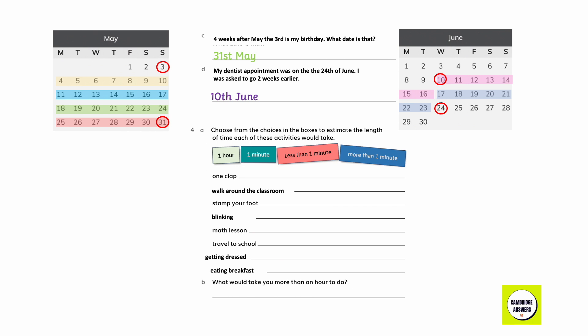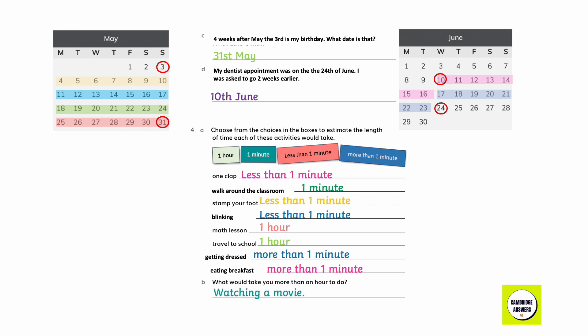Choose from the choices in the boxes to estimate the length of time each activity would take. One clap: less than one minute. Walk around your classroom: one minute. Stamp your foot: less than one minute. Blink your eyes: less than one minute. Math lesson: one hour. Travel to school: one hour. Get dressed: more than one minute. Eat your breakfast: more than one minute.